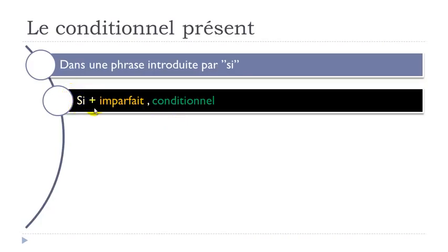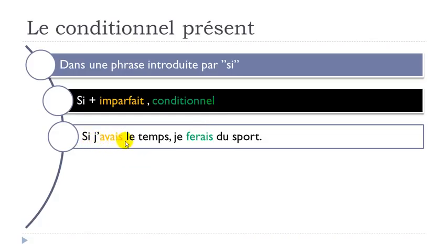Another use of the conditionnel présent is to construct 'if' sentences — like in English. In French, 'if' is 'si'. The rule is strict: if you start with si, it must be followed by the imparfait form, which we haven't seen yet — it will come in the next unit. Then the second clause uses le conditionnel. For example: si j'avais le temps, je ferais du sport (if I had the time, I would do sport).